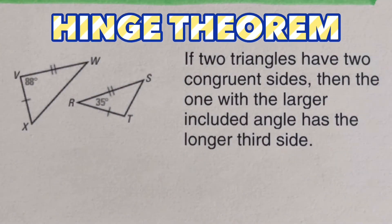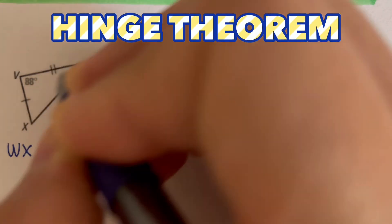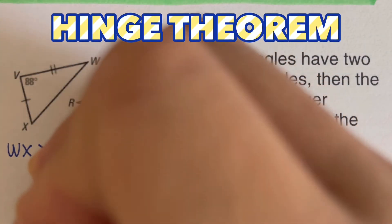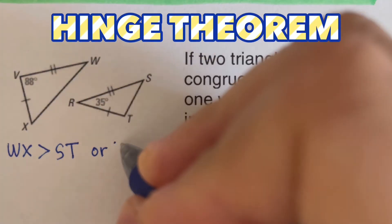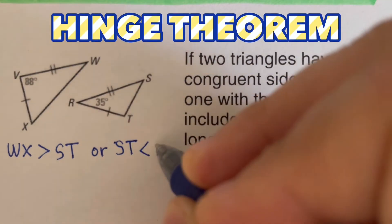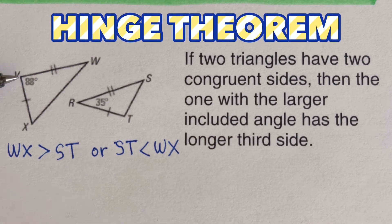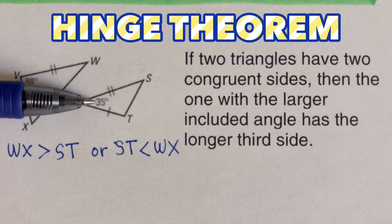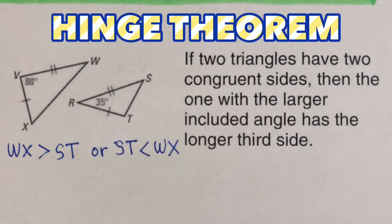We can write this in statement form: line segment WX is greater than side ST, or equivalently, ST is less than WX. The Hinge Theorem tells us that if the angle is big, the side across from it is longer; if the angle is small, the side across from it is shorter.